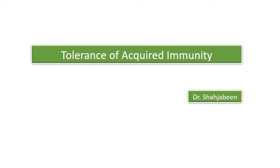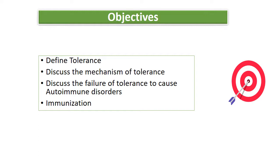Assalamu alaikum dear students. In the previous series of lectures we did acquired immunity in detail — how our immune system reacts to any foreign antigen or invader. Today's topic is how our immune system distinguishes between self and non-self antigen, that is the tolerance of acquired immunity.